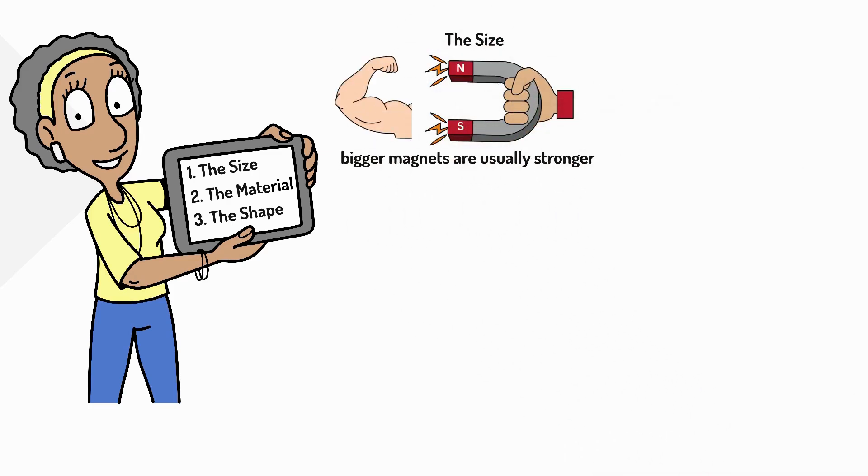Material: some metals are more magnetic. Iron is more magnetic than nickel, so an iron magnet is usually stronger than a nickel magnet.